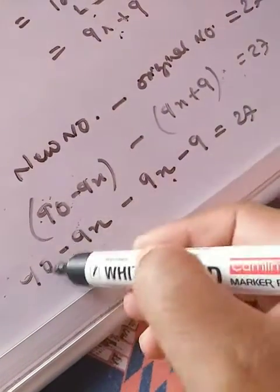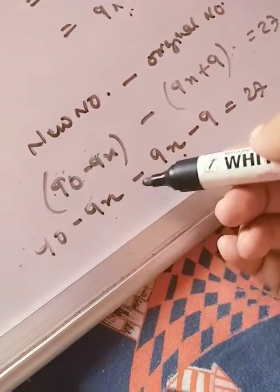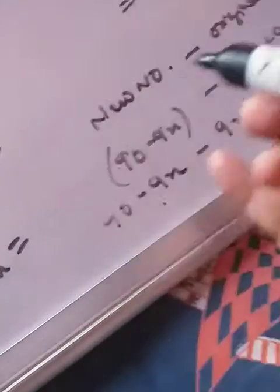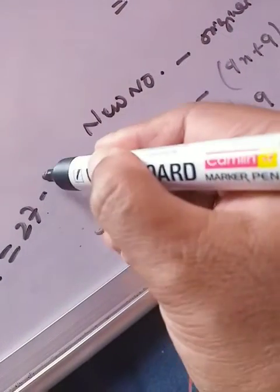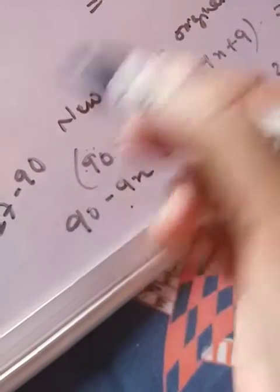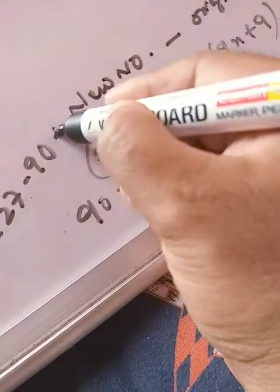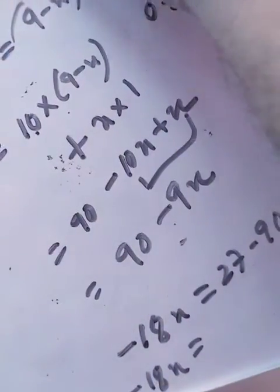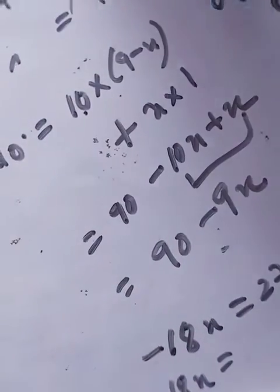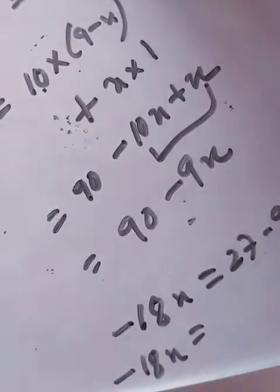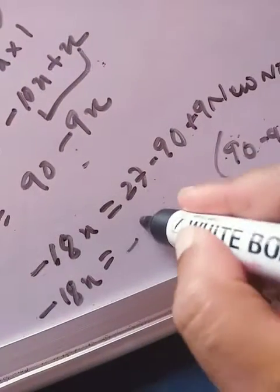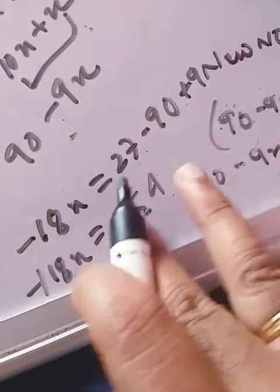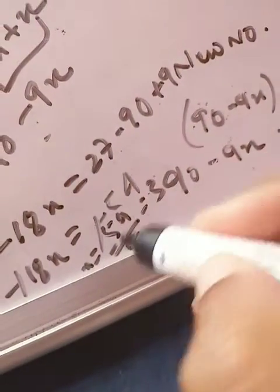Now combining like terms: minus 9x minus 9x gives minus 18x. Taking constant terms to the right-hand side: minus 18x equals 27 minus 90 plus 9, which is 27 plus 9 minus 90, giving minus 54. So minus 18x equals minus 54, and x equals 54 divided by 18, which gives x equals 3.